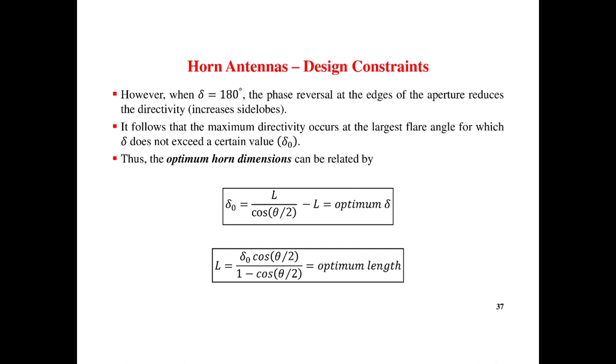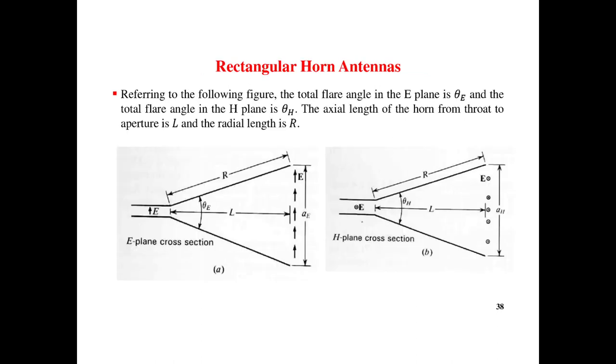For all but very large flare angles, it is nearly unity and hence the additional path on distribution of magnetic field. However, delta equal to 180 degrees, the phase reversal at the edges of the aperture reduces directivity. So, the optimal horn dimension: L equals delta naught cos theta by 2 into 1 minus cos theta by 2.